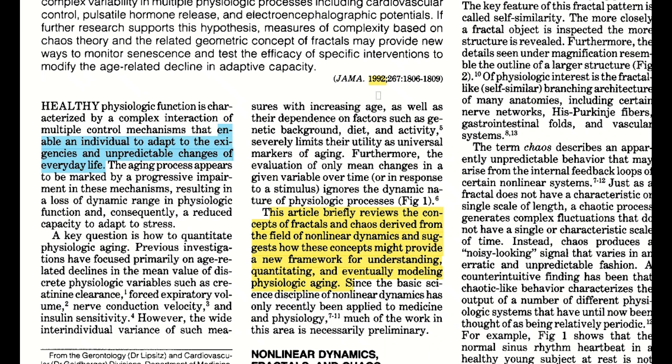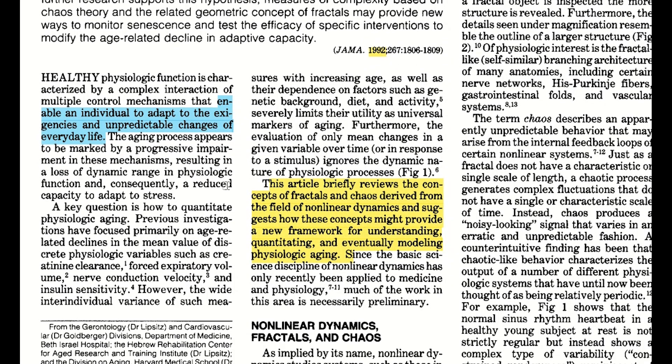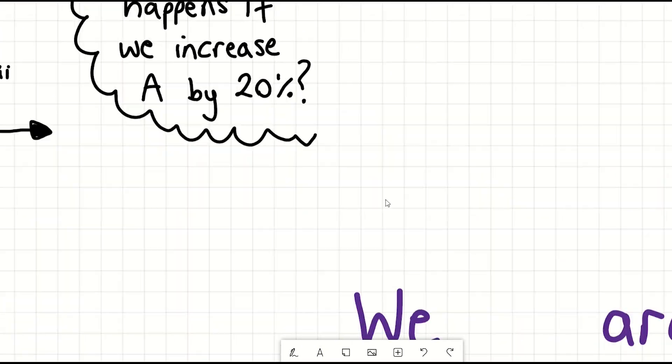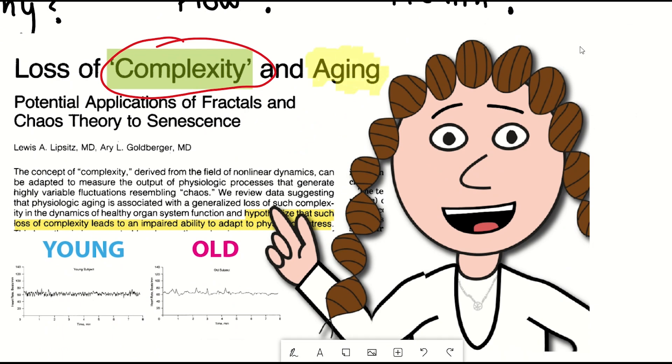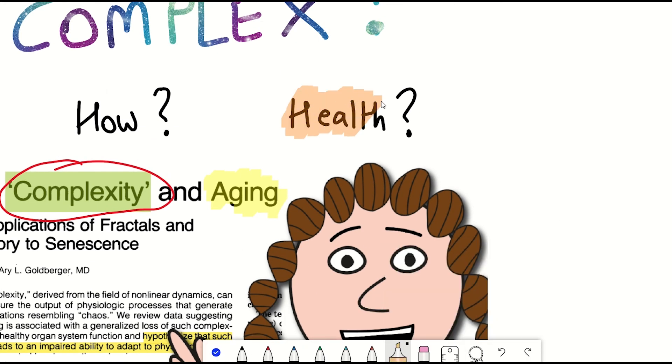But to know for sure, we really need to quantitate it with information we can understand. And so, coming back now to ageing, can systems biology be used to understand health and disease in complex humans?